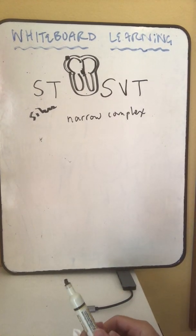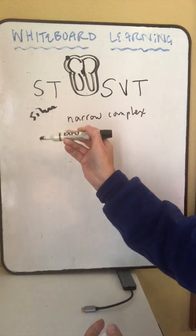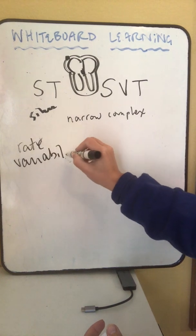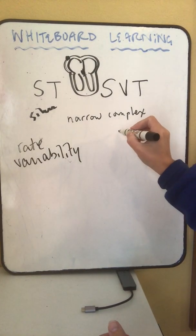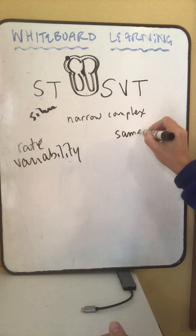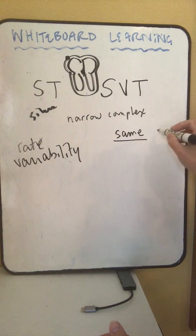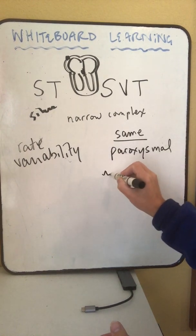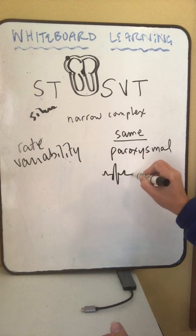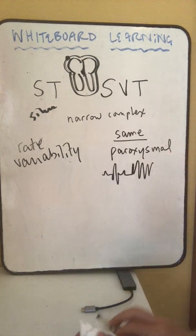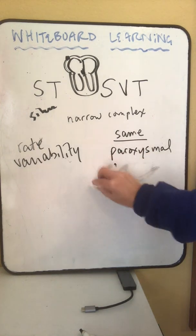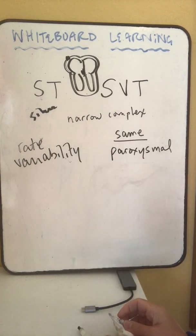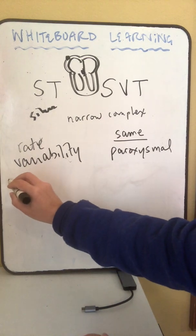The second thing is that sinus tachycardia will have rate variability. And SVT will not. This will either be exactly the same all the time, no rate variability, or it will be paroxysmal. So you'll have a normal P-wave, QRST, and then you might go into the sinus tachycardia. So this will be paroxysmal or all the time, but sinus tachycardias will have some variability. And that will have variability for when they breathe or things like that.